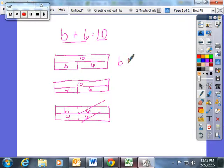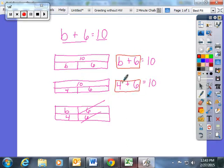In our first tape, I modeled that B plus 6 was equal to 10. In my second model, I showed that 4 plus 6 was equal to 10. And in my last step, I showed that B plus 6 was the same or equal to 4 plus 6.